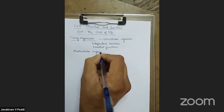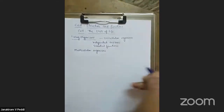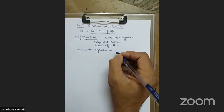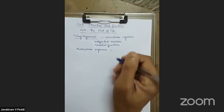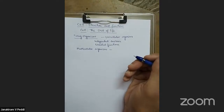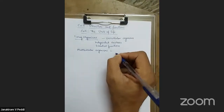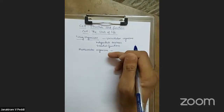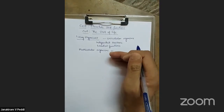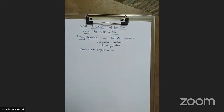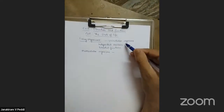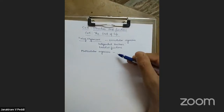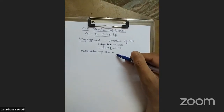In multicellular organisms, which are made up of many cells, there is a division of functions. Some cells perform one type of function while others perform different functions. In contrast, a unicellular organism is made up of only one cell which performs all the functions.